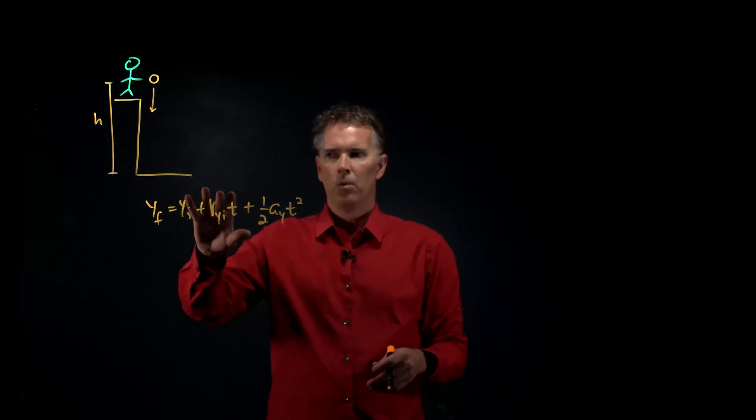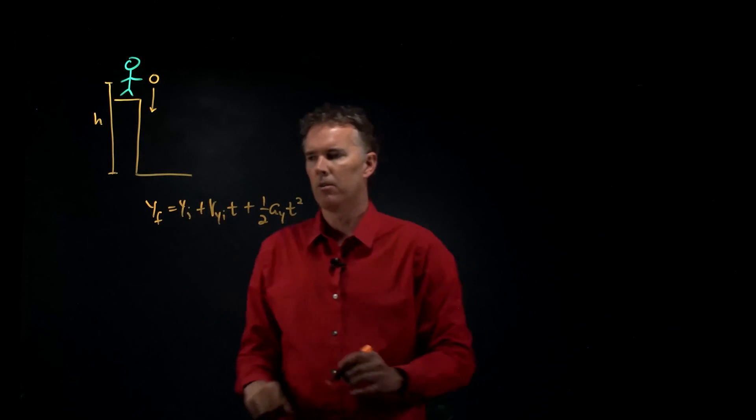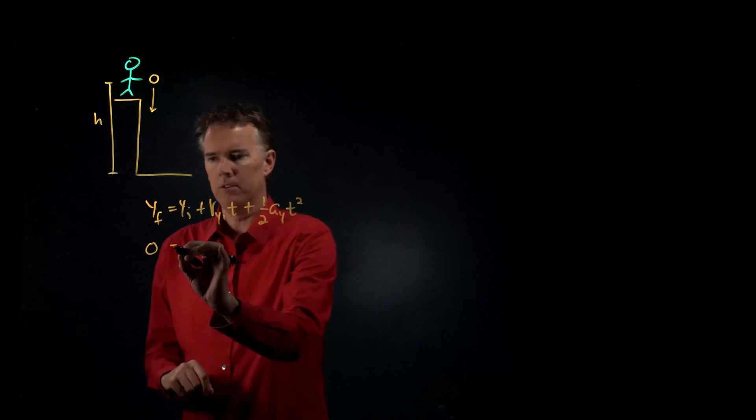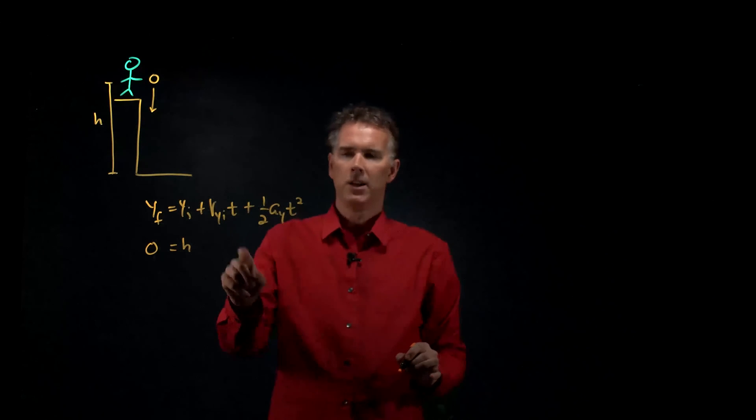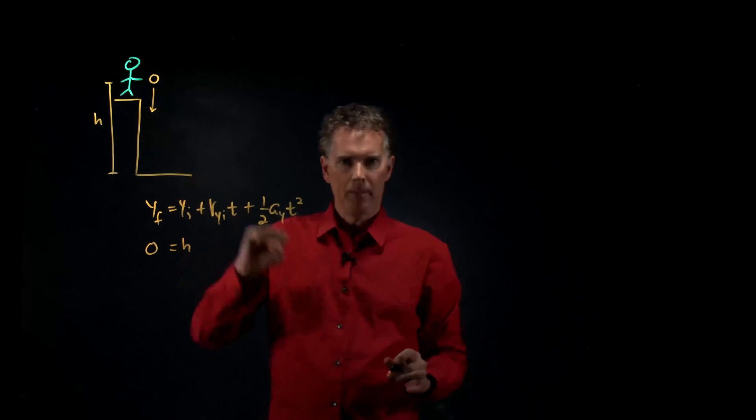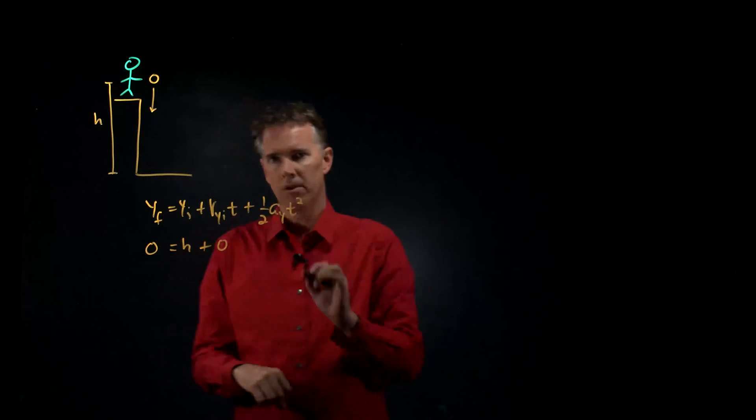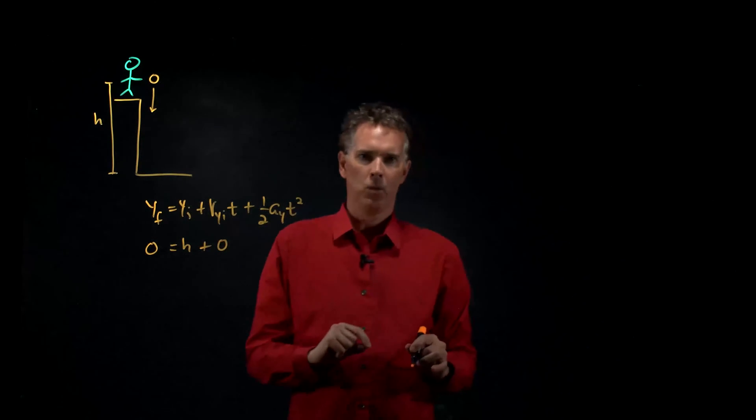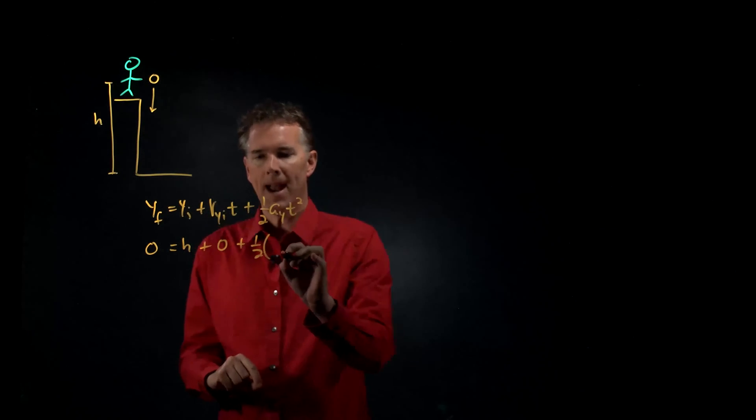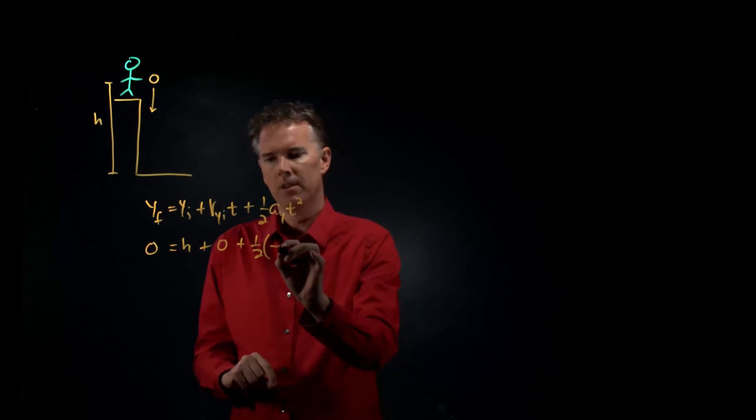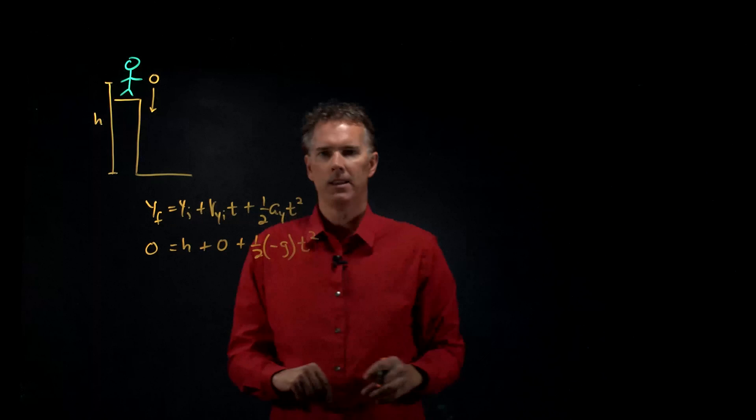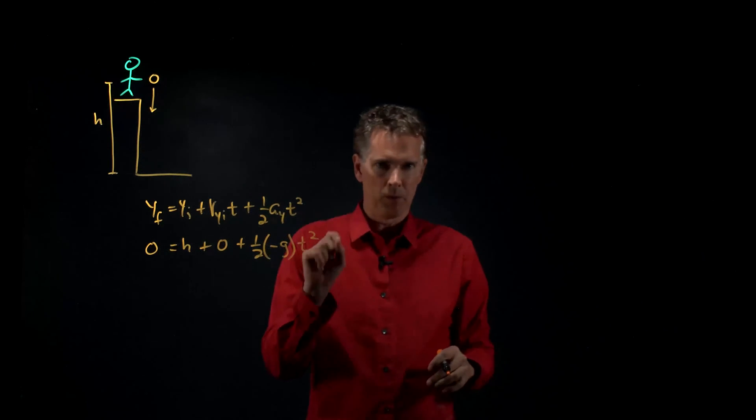Now in our case we're going to say that y final is at the ground, so that becomes zero. Y initial is of course where we started, height h. Vy initial is the initial speed at which you throw it, but if you just drop it from rest then that is zero. What about ay? Ay we know near the surface of the earth has a magnitude of g but it's in the negative direction, so we put a negative g right there. And that's going to be the thing that we want to measure.